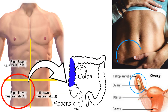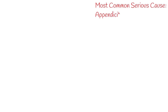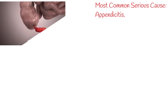Generally, abdominal pain is common and most cases are mild without any serious underlying cause. In most cases, abdominal pain is caused by indigestion, gas, constipation, muscle spasm, muscle strain, or gastritis. But when pain is severe and located specifically in the right lower quadrant of the abdomen,